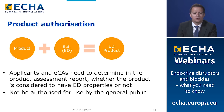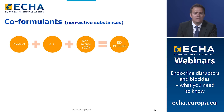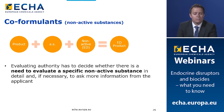Regarding coformulants: a product containing a non-active substance that meets the new endocrine disruptor criteria will also lead the product to be considered an endocrine disruptor. The evaluating authority must decide whether there is a need to evaluate a specific non-active substance in detail and, if necessary, request more information from the applicant. However, further assessment on a non-active ingredient is only required when there are indications based on existing knowledge and available scientific information that it may have ED properties.